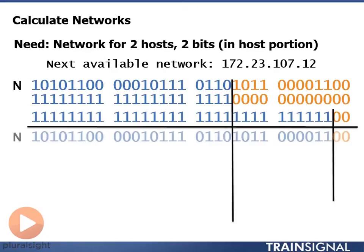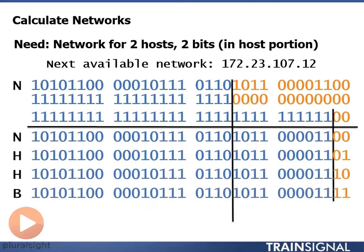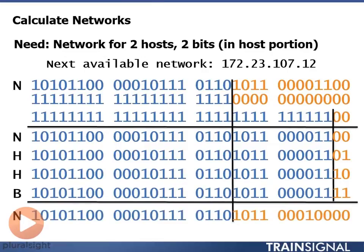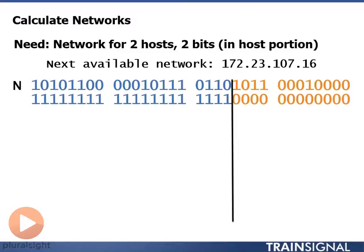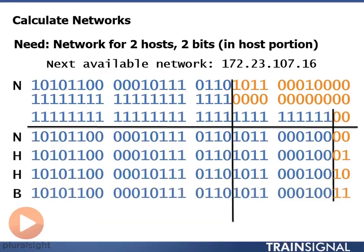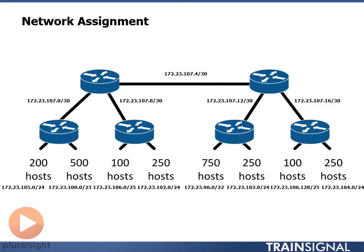Moving to the last network: /30 mask again, first host, last host, broadcast address — add 1 to the broadcast, and that gives us 172.23.107.16 as our last network, with a broadcast address of 172.23.107.19. We've not exceeded our range, since 172.23.96.0/20 goes much higher than our last address of 172.23.107.19. This wraps up variable length subnet masking. I hope I've helped make you a VLSM expert, and I look forward to seeing you in future TrainSignal videos.